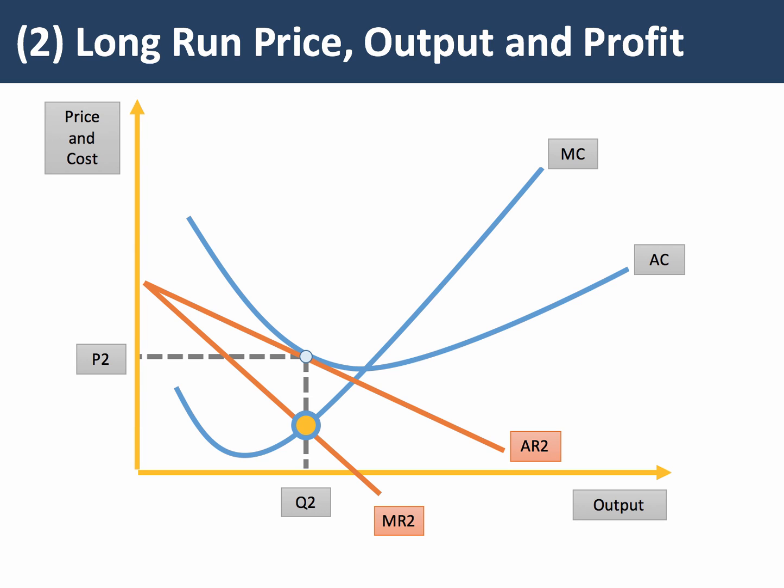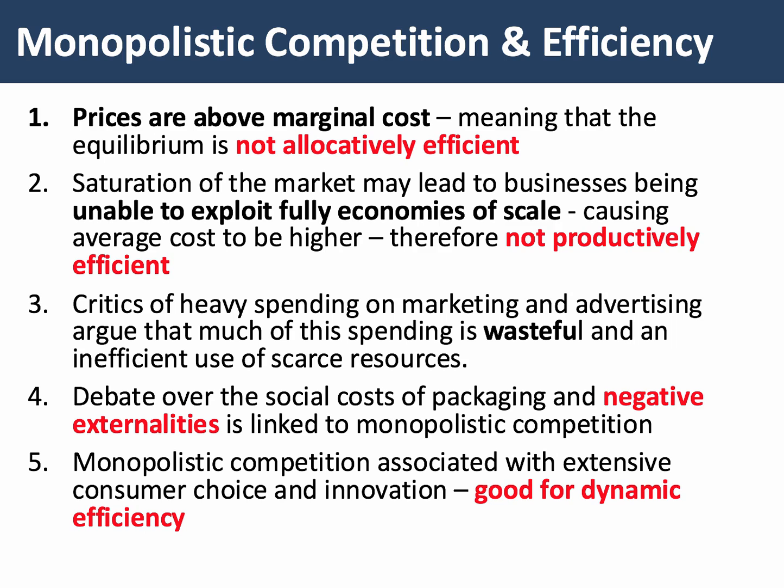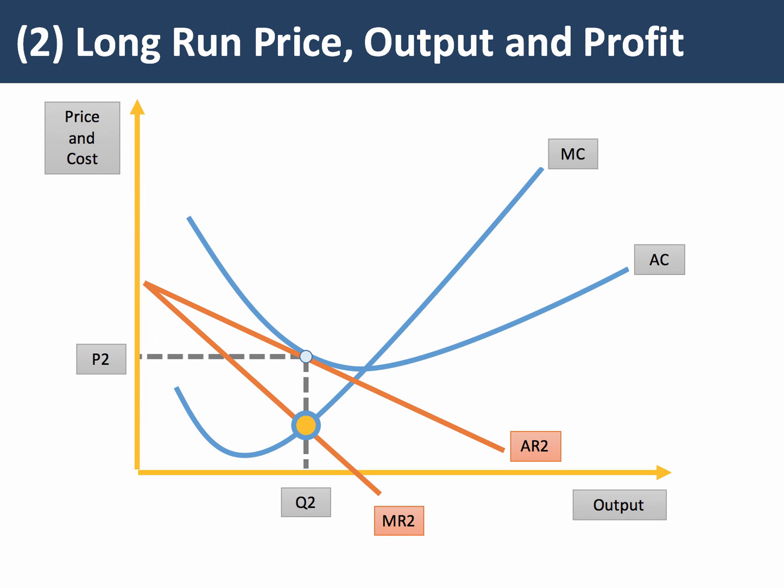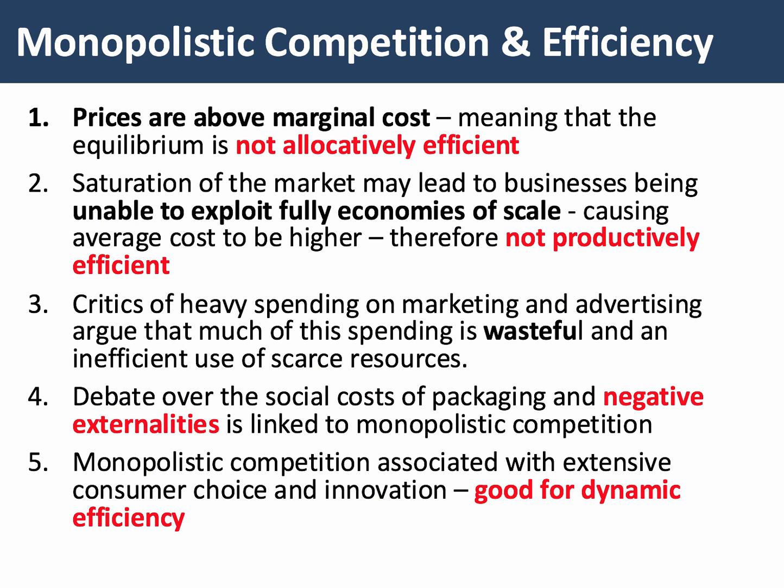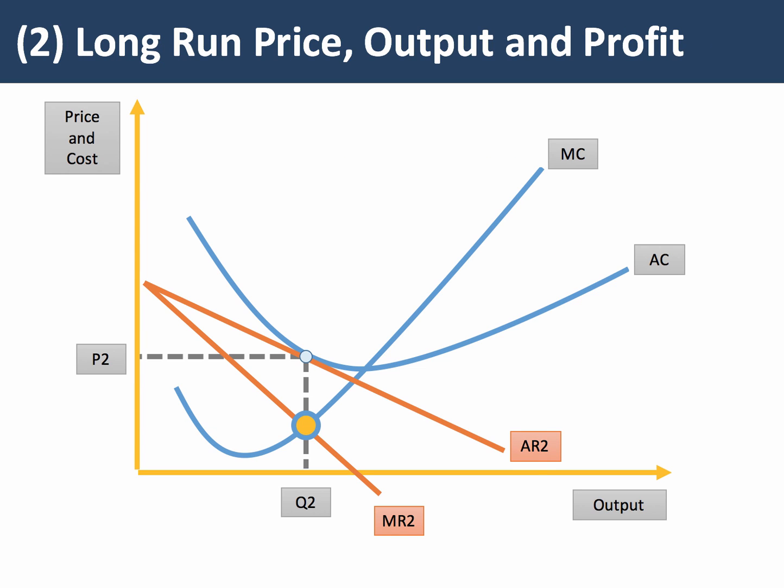In this market, the long run gives normal profit where price equals average cost — it's quite a tricky diagram to draw and needs a lot of practice. What about economic efficiency? Price is above marginal cost, so the equilibrium is not allocatively efficient — P2 is above the marginal cost of supply. There may also be some loss of productive efficiency because the saturation of the market by lots of new products means existing firms are not necessarily able to reach the lowest point of their unit cost curve.